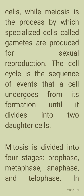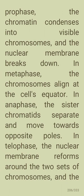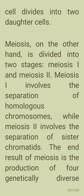In prophase, the chromatin condenses into visible chromosomes and the nuclear membrane breaks down. In metaphase, the chromosomes align at the cell's equator. In anaphase, the sister chromatids separate and move towards opposite poles.